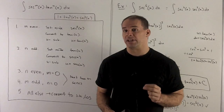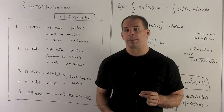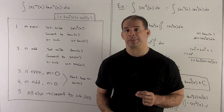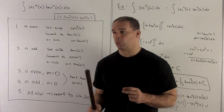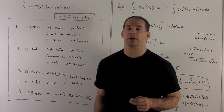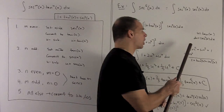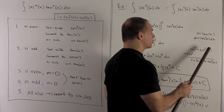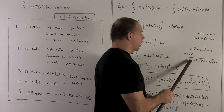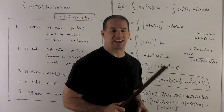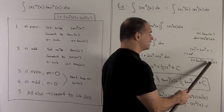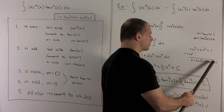Our problem now is indefinite integrals of the form secant to a power times tangent to a power, where the powers are non-negative integers. What's going to drive all of our tricks is the equation 1 + tan²x = sec²x. Recall how we get this: start with cos²x + sin²x = 1, divide through by cos²x, giving 1 + tan²x = sec²x.